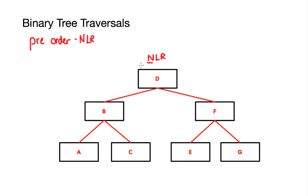Let's have a look at this on the binary tree. The first step is to write down the node we are currently on, which is always the root node — the highest node in the tree, in this case D. So I write D down and tick off the rule I have completed.